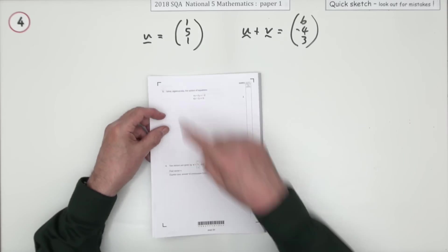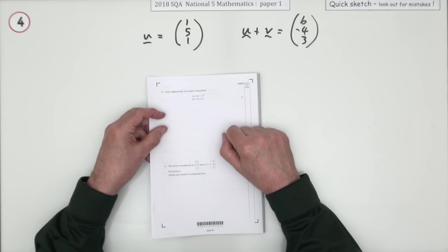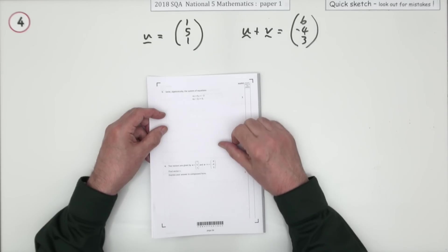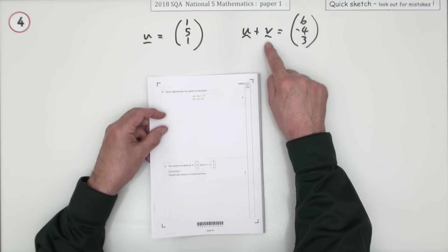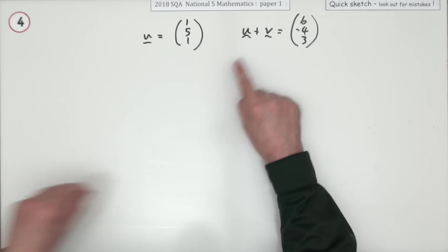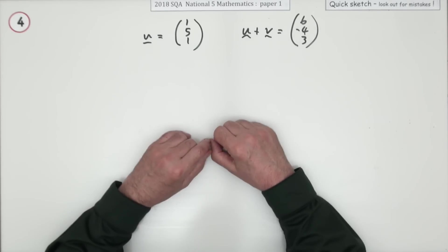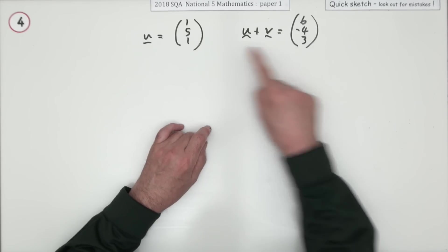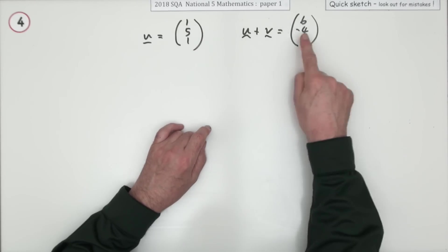Number 4 then. U is given by this column vector here. U plus some other vector is given by this column vector here. You have to figure out this one. What's that missing one? What's V? What's been added? You can almost just do it by inspection. Say well if that's U and you add on V and end up with this, what have you added on to get those numbers?